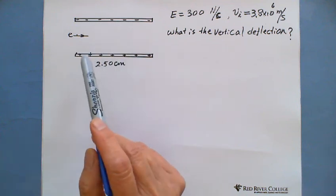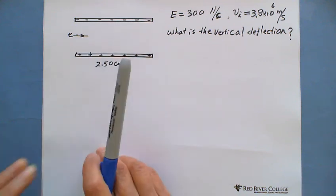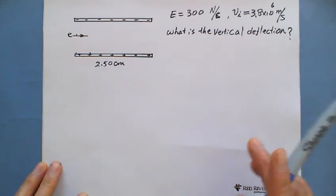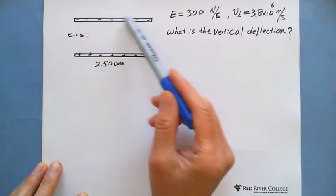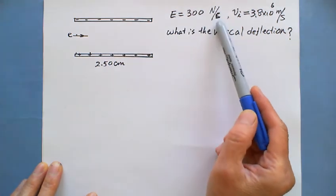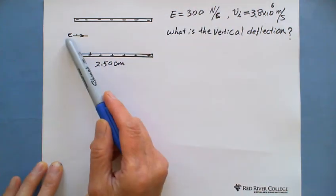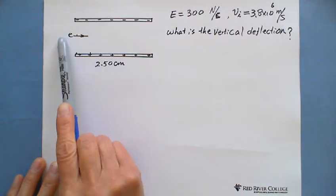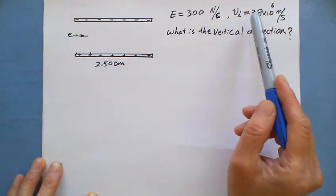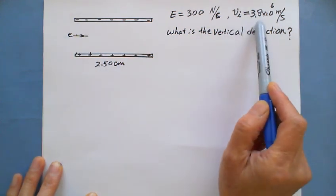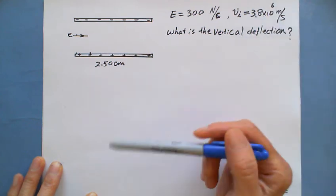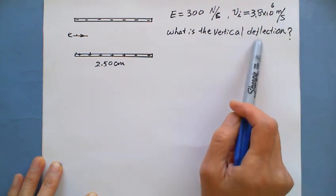The parallel plate, the bottom one is positively charged and the top is negatively charged. So the electric field between the parallel plates is 300 newtons per coulomb. The electron beam shoots horizontally between these two plates. The initial velocity is 3.8 times 10 to the 6 meters per second. They're looking for what is the vertical deflection.